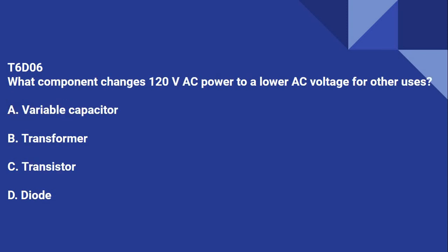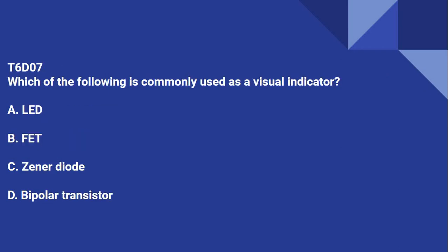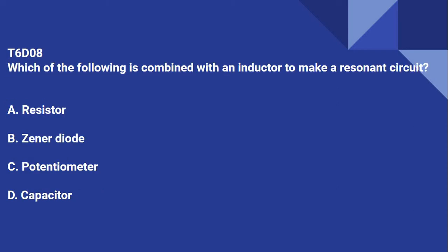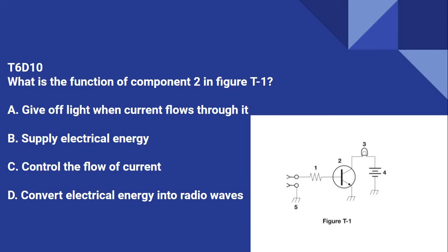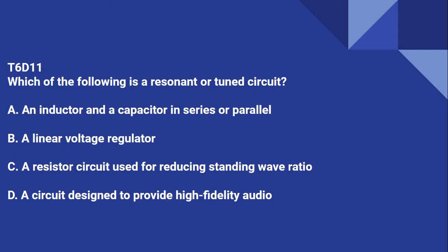T6D05: Which type of circuit controls the amount of voltage from a power supply? That's a regulator. T6D06: Which component changes 120 volts AC to a lower AC voltage for other uses? Transformer. T6D07: Which of the following is commonly used as a visual indicator? LED. T6D08: Which of the following is combined with an inductor to make a resonant circuit? A capacitor. T6D09: What is the name of a device that combines several semiconductors and other components into one package? That is an integrated circuit. T6D10: What is the function of component 2 in figure T1? It controls the flow of current. T6D11: Which of the following is a resonant or tuned circuit? An inductor and a capacitor in series or parallel.